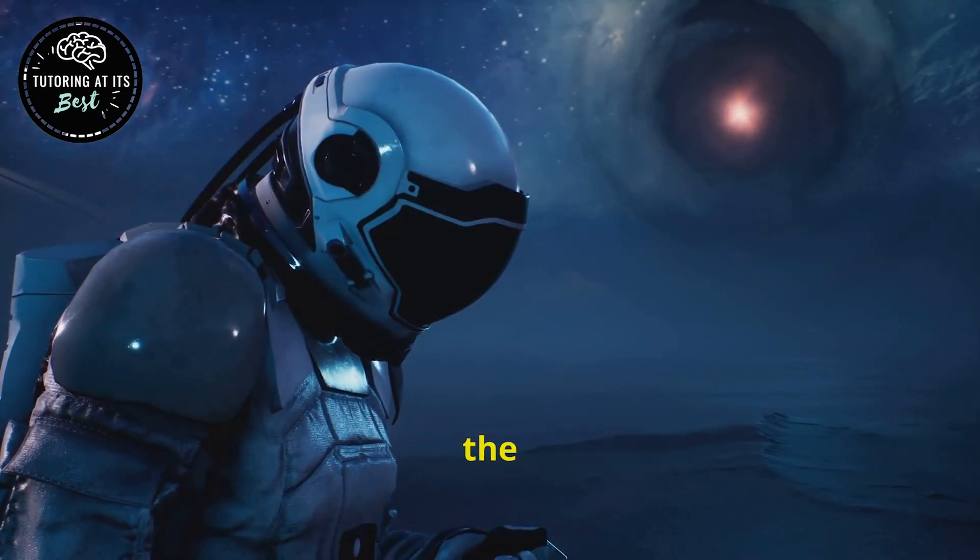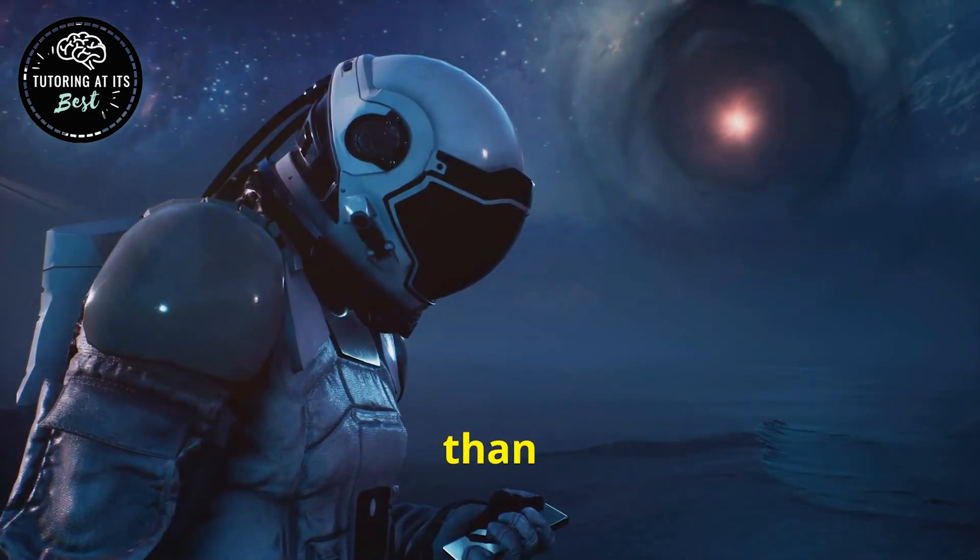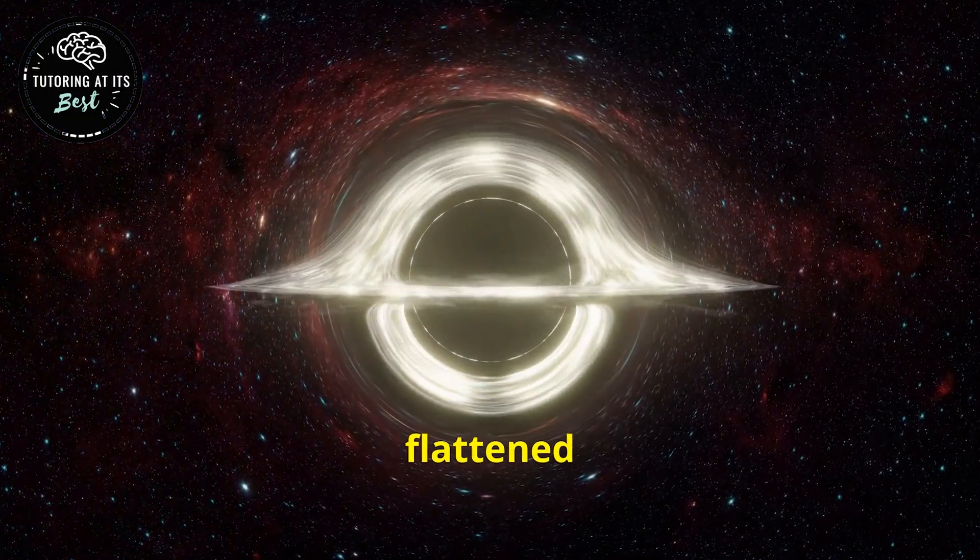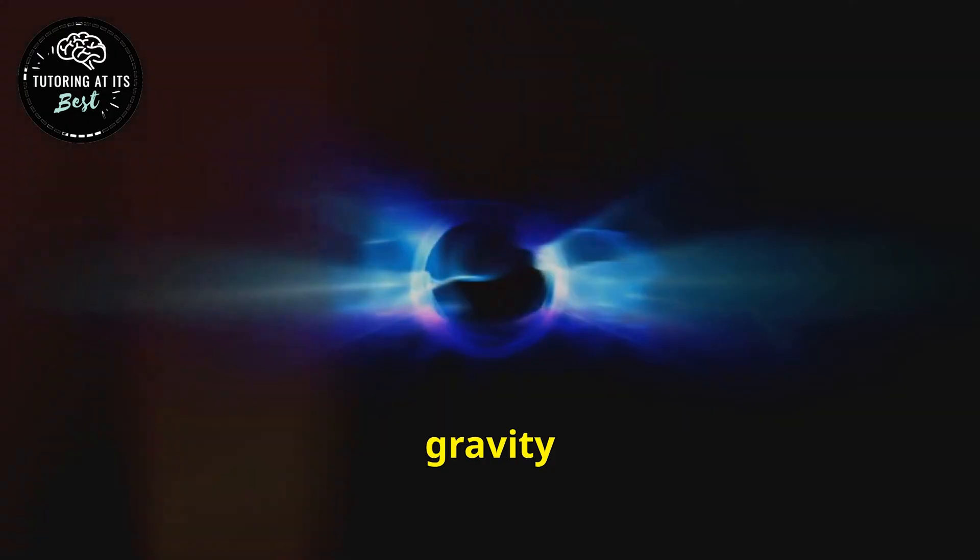Imagine standing on the surface of a planet with gravity a million times stronger than Earth's. You'd be instantly flattened like a pancake. The closer you get to the event horizon, the stronger the gravity becomes.